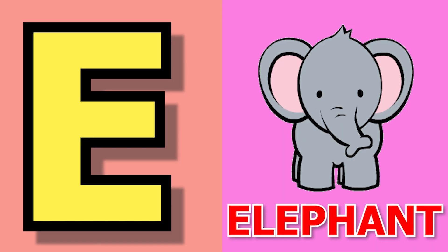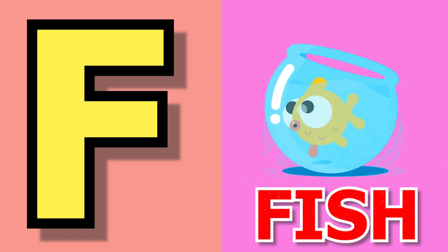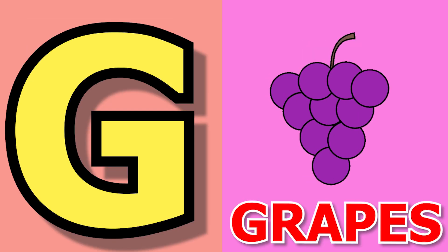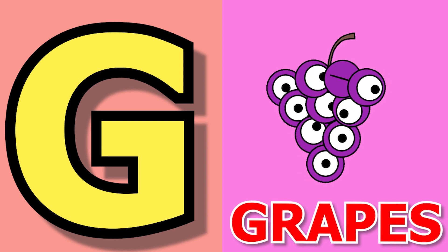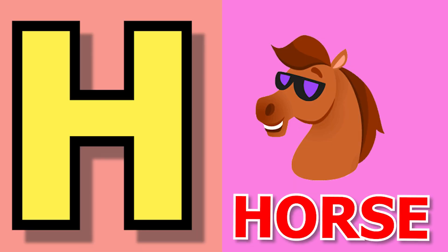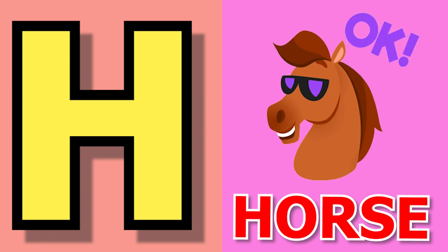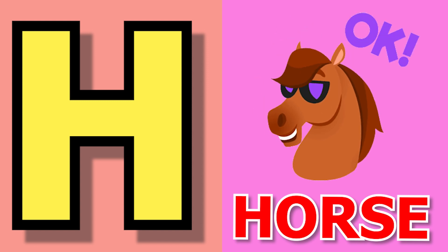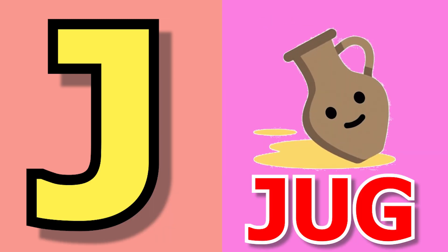E for elephant, elephant means haathi. F for fish, fish means machli. G for grapes, grapes means angoor. H for horse, horse means ghoda. I for ice cream, ice cream means ice cream.